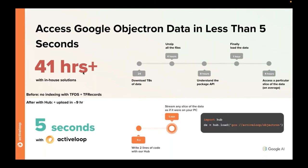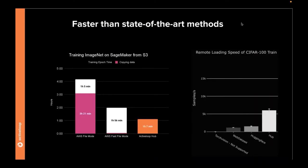You can instantly access the dataset while data is prefetched, decompressed, and cached behind the scenes — the data scientist doesn't have to worry about any of this. Our benchmarks show that on SageMaker with a GPU, instead of waiting for data to copy before training, you can achieve the same training speed as local data. SageMaker's fast file mode creates a virtualized file system on S3 but doubles training time; with our open-source solution, you get local-equivalent speed while streaming from cloud storage.